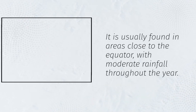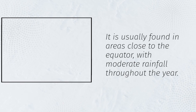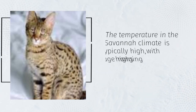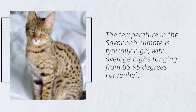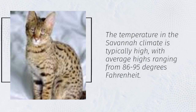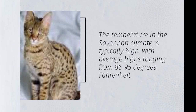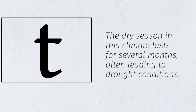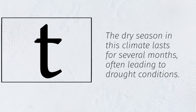It is usually found in areas close to the equator, with moderate rainfall throughout the year. The temperature in the Savannah climate is typically high, with average highs ranging from 86 to 95 degrees Fahrenheit. The dry season in this climate lasts for several months, often leading to drought conditions.